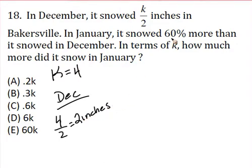Now in January it snowed 60 percent more. So I've actually got to find a 60 percent increase over 2. And a nice quick shortcut to that is you can just multiply by 1.6. This here represents the 60 percent increase.